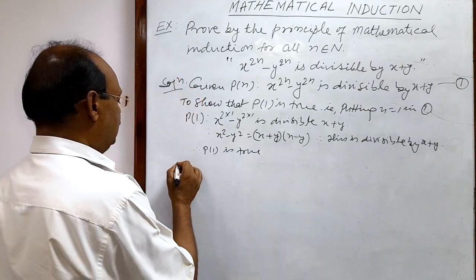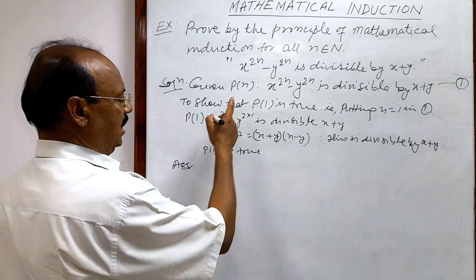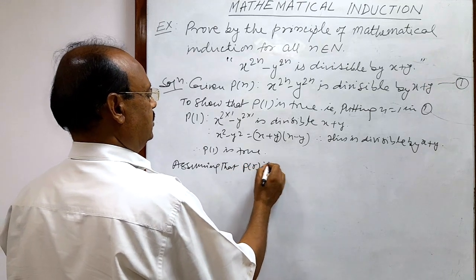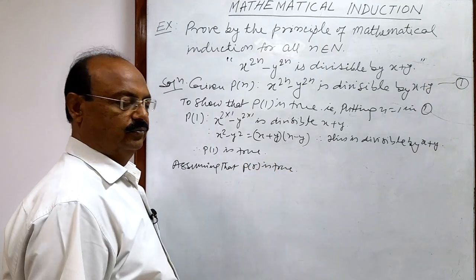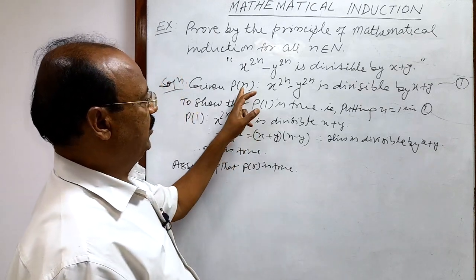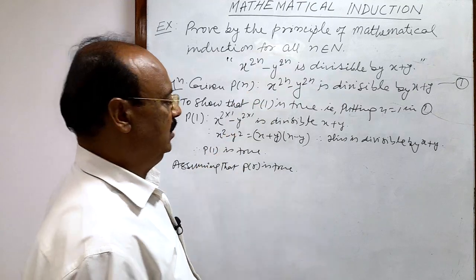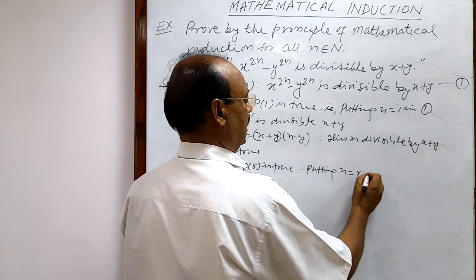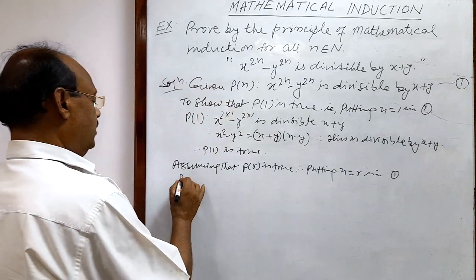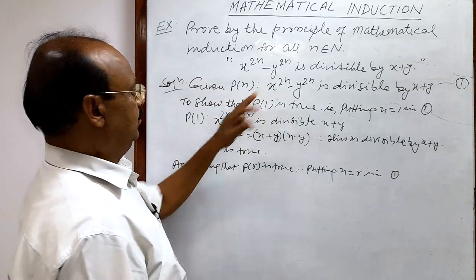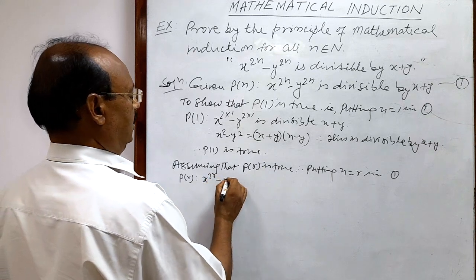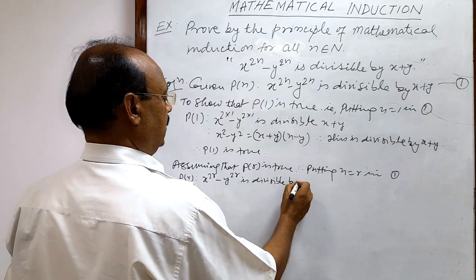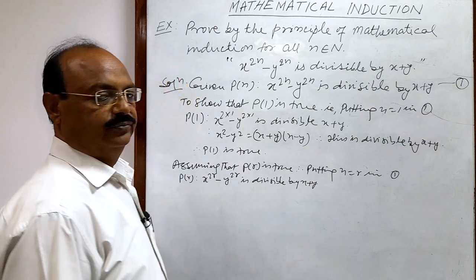In the second step, we assume that P(r) is true. We get P(r) by putting n equal to r in relation number 1. So P(r) states: x to the power 2r minus y to the power 2r is divisible by x plus y. We are assuming it.